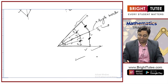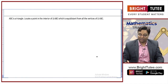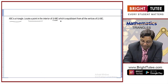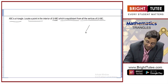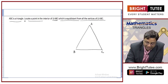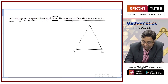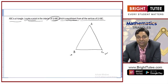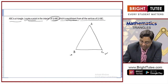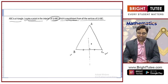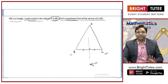I hope you have understood these two concepts. Now let me start the exercise and tell you what is the use of these concepts. ABC is a triangle. Locate a point in the interior of triangle ABC which is equidistant from all the vertices. If I want a point equidistant from vertices B and C, I will find it on the perpendicular bisector of line BC. So I will draw a perpendicular bisector, and every point on this perpendicular bisector is equidistant from B and C.